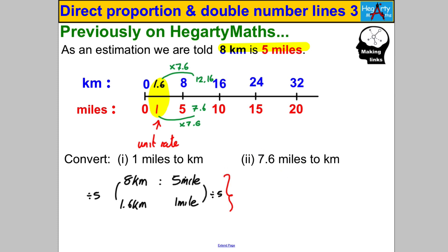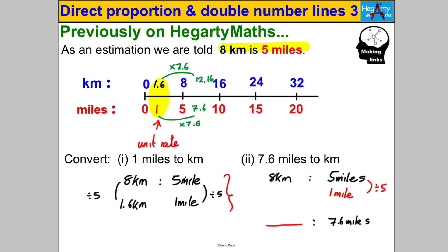Using ratios: write 8 km to 5 miles. We want 7.6 miles, so first scale down to the unit rate by dividing both sides by five to get 1.6 km to 1 mile. Then multiply both sides by 7.6 to get 12.16 kilometres. This is the method we'll use going forward.